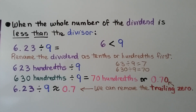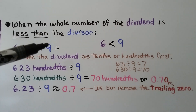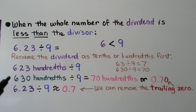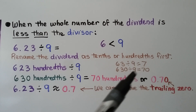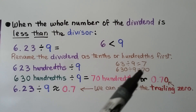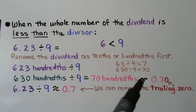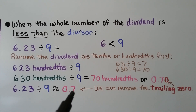Remember: when the whole number of the dividend is less than the divisor — for example, 6 is less than 9 — we rename the dividend as tenths or hundredths first. We can rename 6.23 as 623 hundredths, then divide by 9. We round to 630 hundredths, because 63 divided by 9 equals 7. So 630 divided by 9 equals 70, and 630 hundredths divided by 9 equals 70 hundredths, or 7 tenths — we can remove the trailing zero.